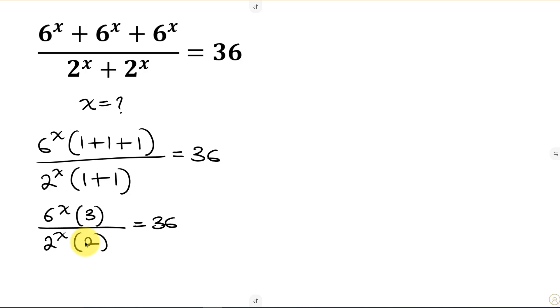Now we can separate this. I'm going to be writing this first. This is 3 over 2. So 3 over 2 multiplied by. Now notice that 6 to the power of x and 2 to the power of x, they both have the same exponent which is x. So I can group them together. So it will be 6 over 2 all raised to the common exponent that is x. And this is equal to 36.